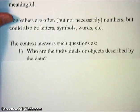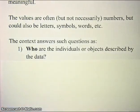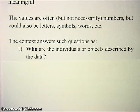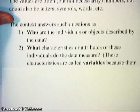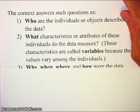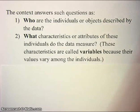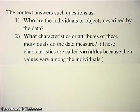When you're looking at data, you always have to consider the context from which they came. The context is going to tell you who are the individuals or objects described by the data. The individuals could be people, animals, inanimate objects, products coming off an assembly line, or corn coming out of a farmer's field. The first thing you need to know is who are we talking about. The second thing is what characteristics or attributes of these individuals do the data measure. These characteristics are called variables because their values vary among the individuals.